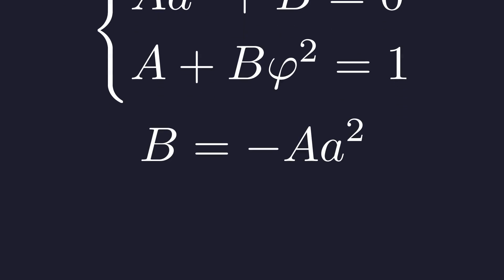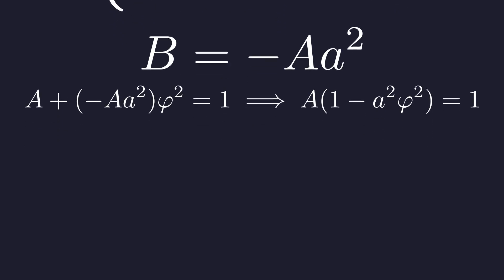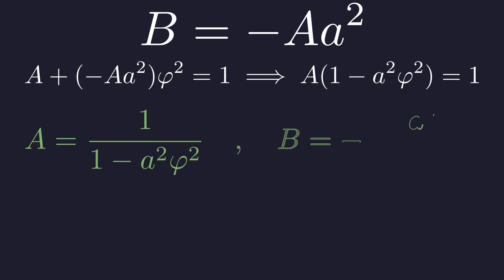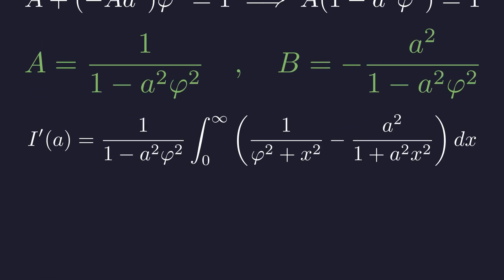This gives us a system of two linear equations with two unknowns, A and B. From the first equation, we express B in terms of A, then substitute into the second equation. Solving gives us the values for A and B, which we substitute back into our integral for I prime of A.